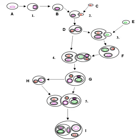The Hemiaulus-Richelia symbiosis is not obligatory, especially in areas with excess nitrogen. Richelia intracellularis is also found in Rhizocylenia spp., a diatom found in oligotrophic oceans. Compared to the Hemiaulus host, the endosymbiosis with Rhizocylenia is much more consistent, and Richelia intracellularis is generally found in Rhizocylenia.